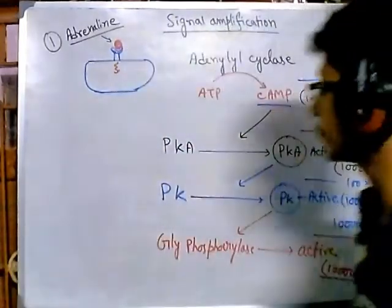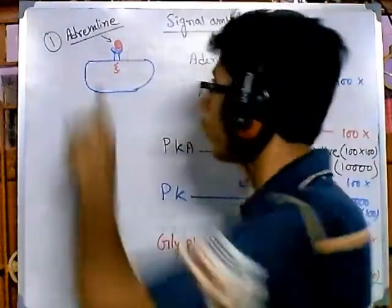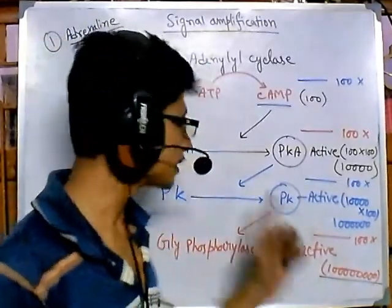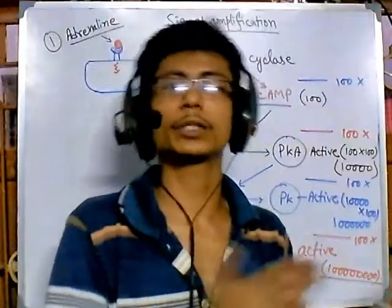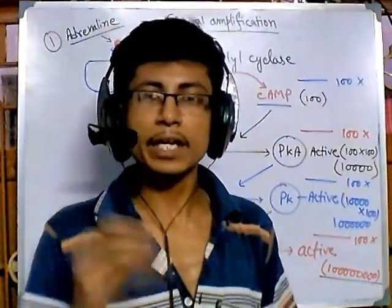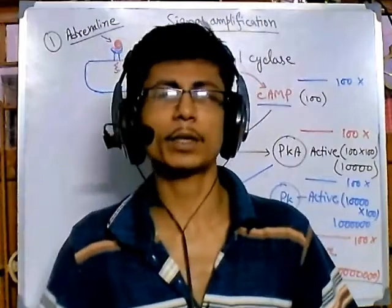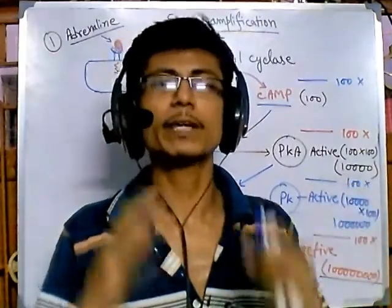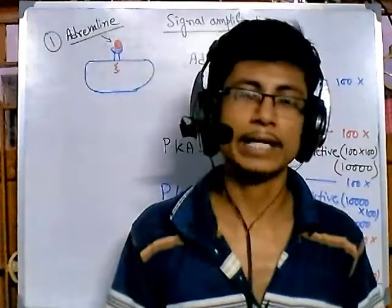This signaling pathway is breaking down glycogen into glucose-1-phosphate, and this is all possible from one single hormone molecule. This is signal amplification — if we needed a million adrenaline molecules to activate enough glycogen phosphorylase, it would be very difficult for the body to produce that many proteins at once. But this amplification saves time and energy, making it very efficient. That's why signal amplification is required.